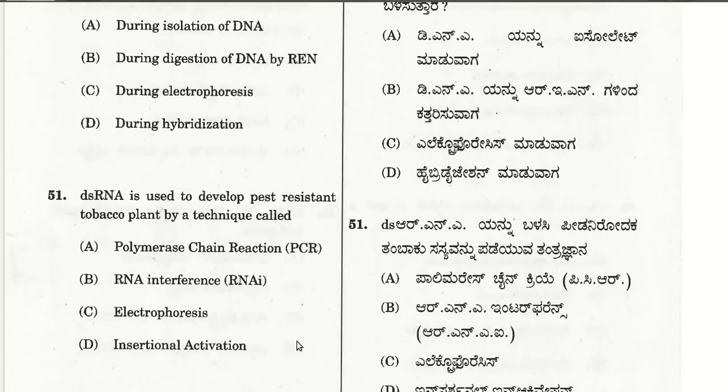The fifty-first question: double-stranded RNA (dsRNA) is used to develop pest-resistant tobacco plants by a technique called RNA interference, also known as RNAi.